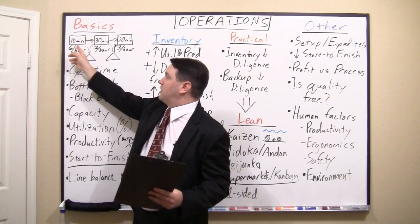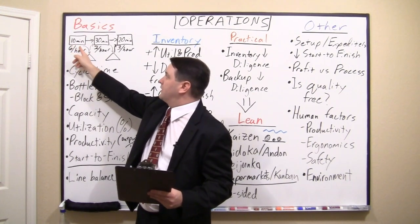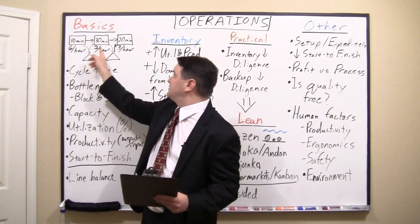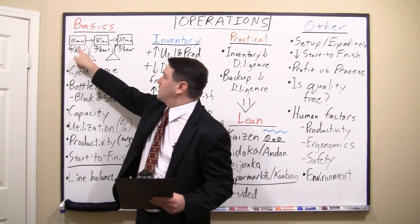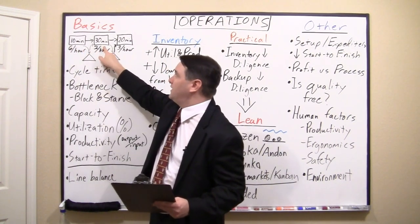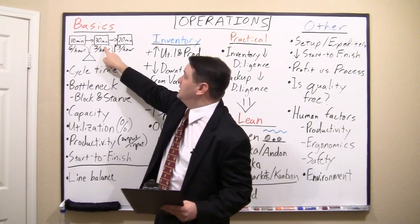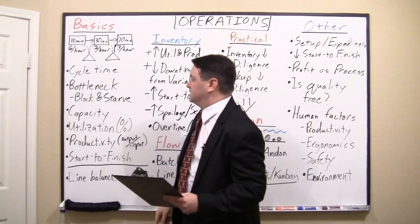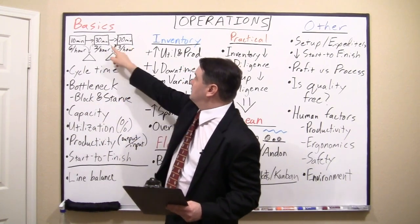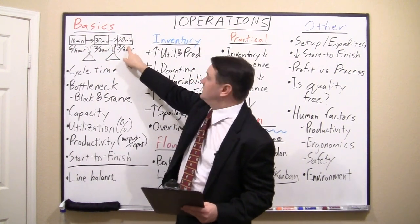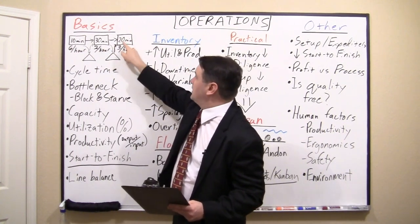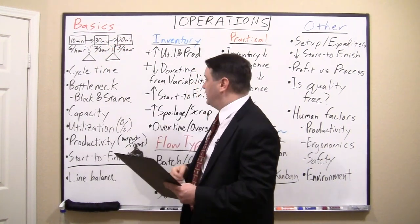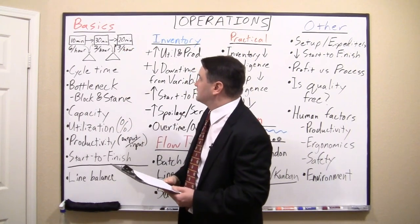When this person starts a product, they do their work and then pass it off to the next person, and then start on the next one. But the problem is this middle person takes 30 minutes. So the first operator finishes in 10 minutes but has to wait another 20 minutes until this person is ready to accept it — that's called being blocked. The opposite is called being starved: the last operator finishes in 20 minutes, then has to wait 10 minutes for the next piece. That operation is starved.